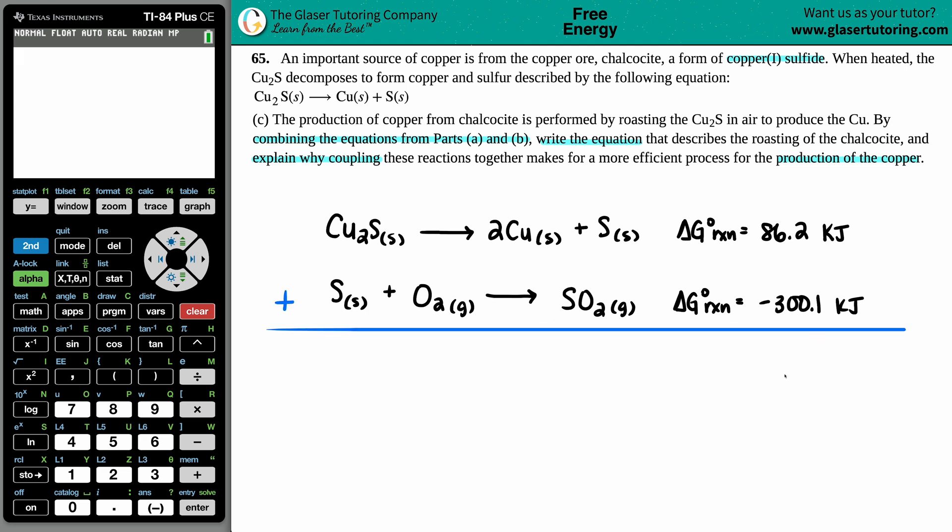Now when we're adding them together, that just means that we're looking for things that can be canceled on opposite sides. I'm looking at this equation and this equation to see if there's anything that are the same. Yeah, there's a sulfur solid on the right side and a sulfur solid on the left side, and it's the same amount—I got one on the left, one on the right, so these will cancel out.